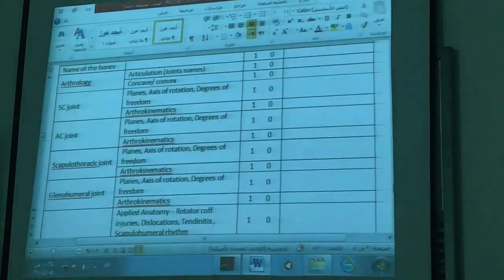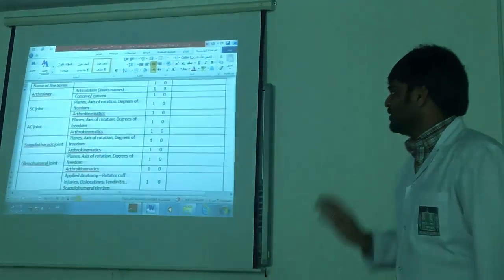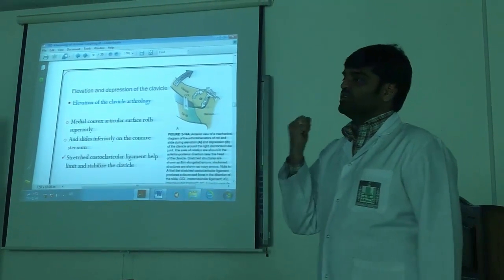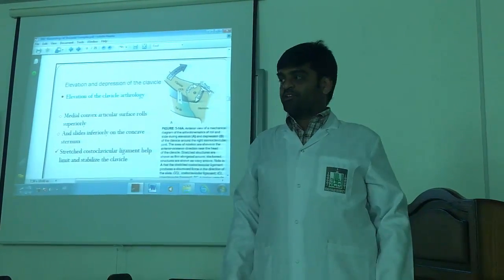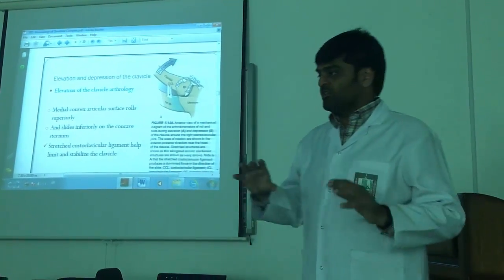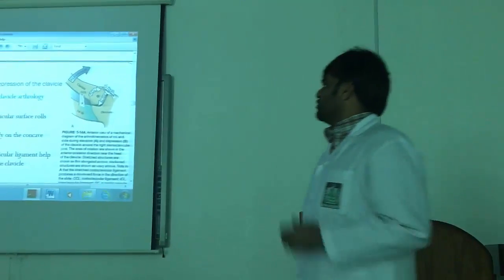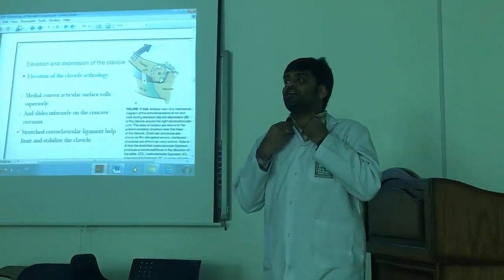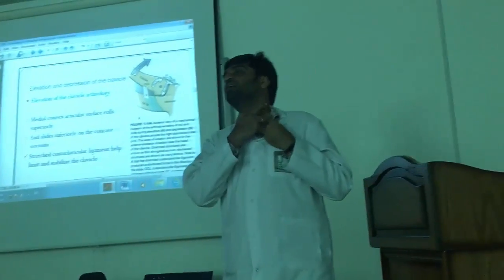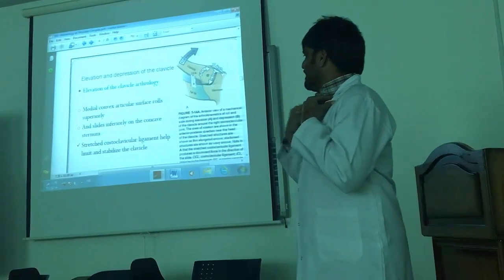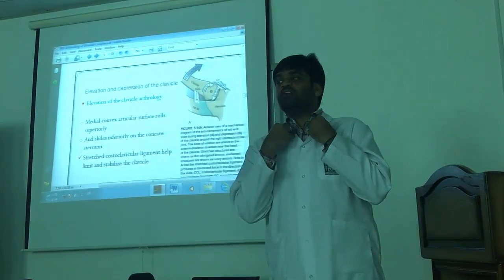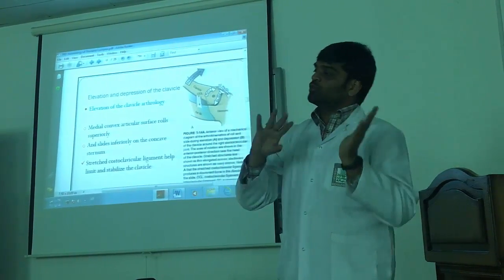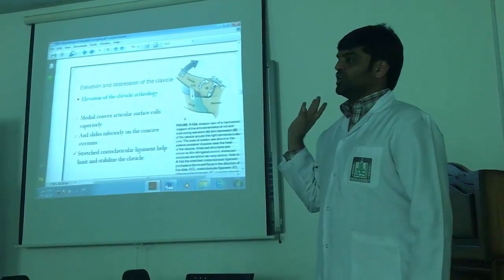Coming to the sternoclavicular joint — articulation between your sternum and clavicle. We have elevation, depression, protraction, retraction, upward rotation, and downward rotation. During elevation, the medial convex articular surface rolls superiorly and slides inferiorly on the sternum. The clavicle is moving; sternum is fixed. So during elevation, the medial surface rolls superior and slides inferior — roll and slide in opposite directions because it is convex on concave.